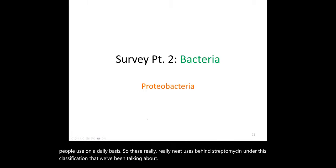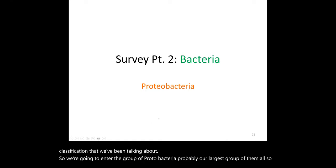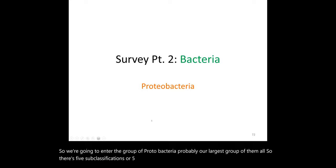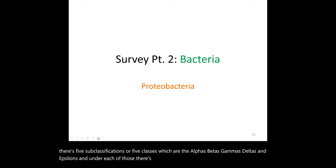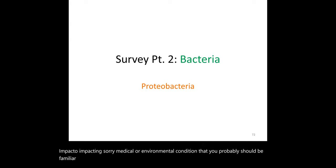Now we enter the Proteobacteria — probably the largest group of all. There are five subclassifications or classes: alpha, beta, gamma, delta, and epsilon. Under each are organisms with significant medical or environmental impact. We'll move on to covering the Proteobacteria as our largest group of bacteria to be studied.